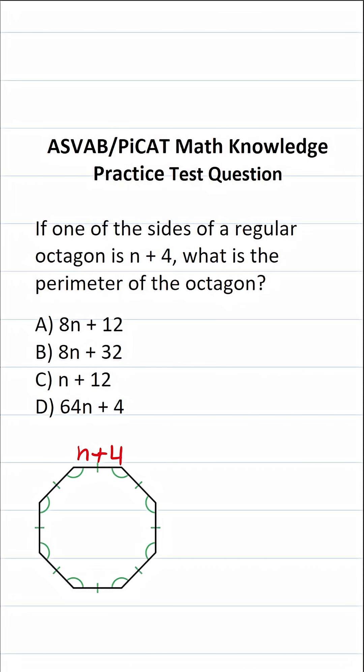So in other words, if one side is n plus 4, all the other sides are going to be n plus 4 as well. You should know that in order to find the perimeter of any polygon, you simply add up all of its sides. So you can do n plus 4 added 8 times, or you could simply do 8 times n plus 4.